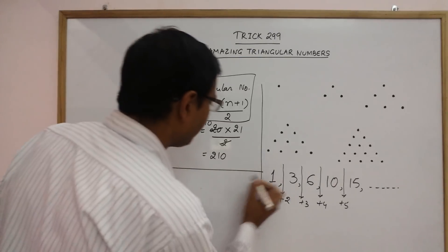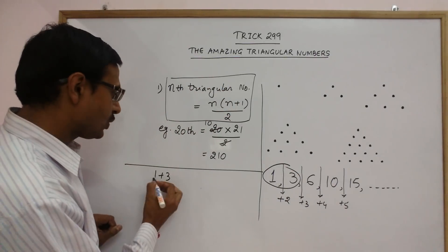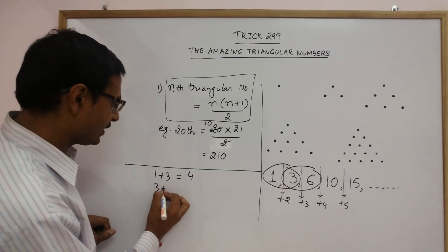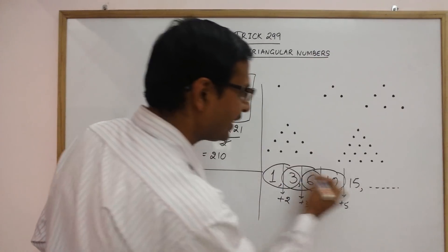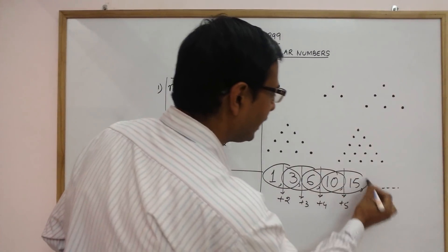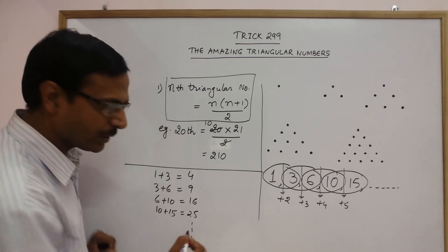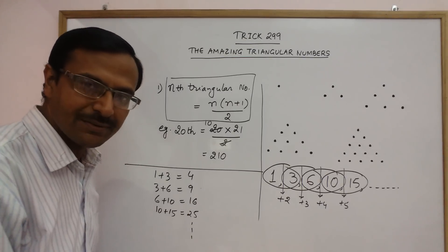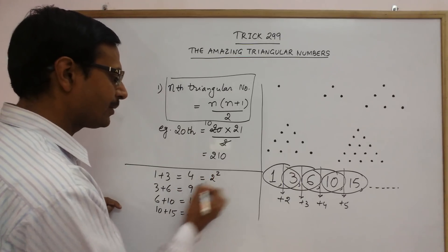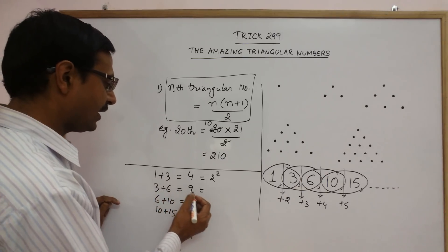See, suppose I am adding 1 and 3. See, these are the first two triangular numbers, 1 and 3. So, if you add them, you get 4. If you add 3 and 6, you get 9. If you add 6 and 10, you get 16. If you add 10 and 15, you get 25. And so on. You can continue this pattern. Now, see, what do you observe? The first two triangular numbers, when you add them, you get 4 which is 2 square. Next two triangular numbers, if you add the next two triangular numbers, you get 9 which is 3 square.